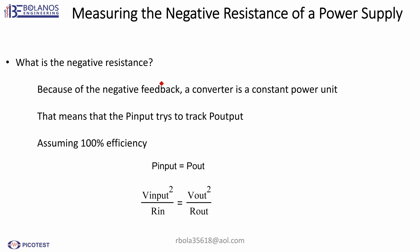Well, because of the negative feedback of the converter, the power supply converter is actually a constant power unit. That means your output power and your input power track to each other. We're going to assume that we have 100% efficiency. So with that assumption, you can say that the input power will always be the same as your output power and vice versa.